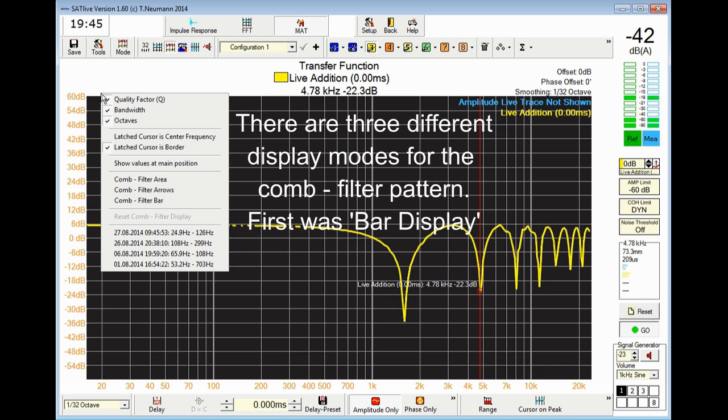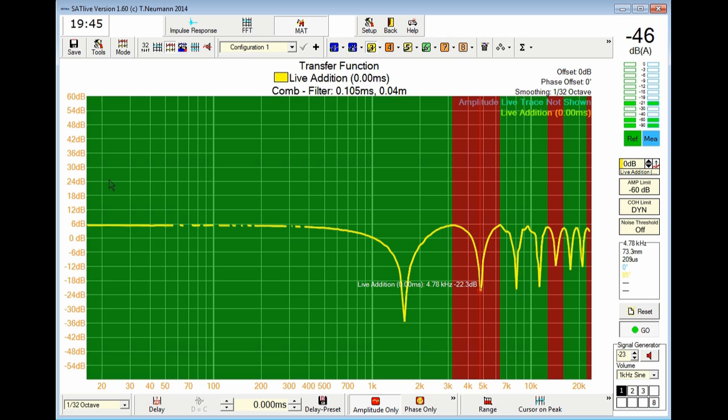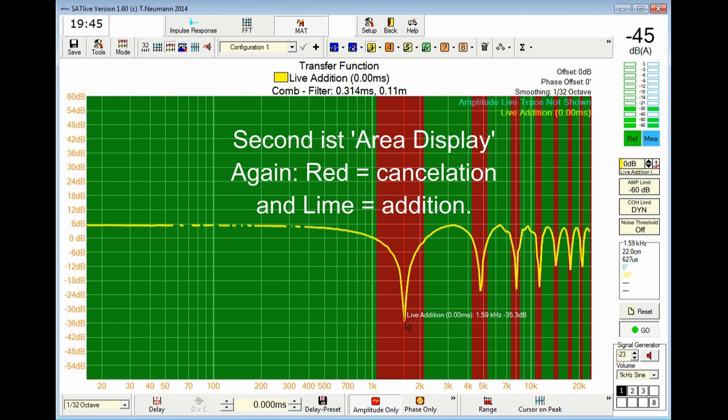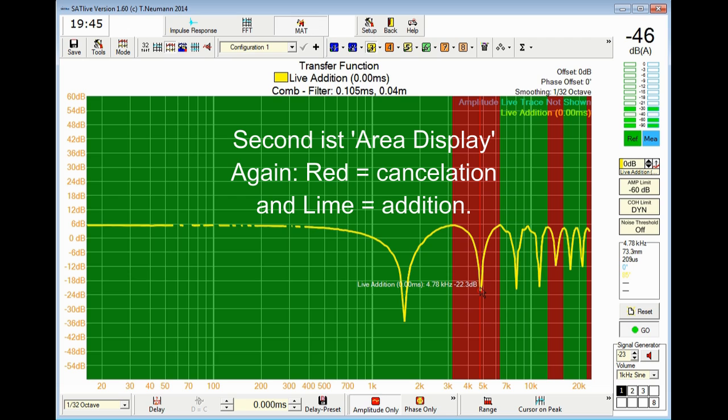Other way of display is the so-called area display which puts the colors in the background. Again red is dip and green is addition.